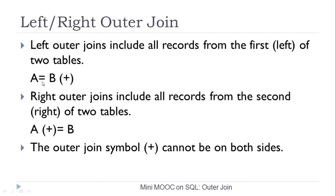In simple words: if the full table appears on the left-hand side of the equality condition, it is called left outer join; if the full table appears on the right-hand side, it is called right outer join. It is important to note that the join type is always opposite to the position of the plus sign. If the plus sign appears on the right side, it is left outer join. If the plus sign appears on the left side, it is right outer join. The type of outer join is decided based on the position of the full table.